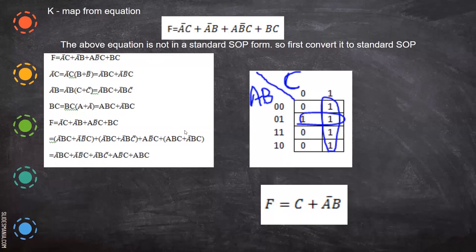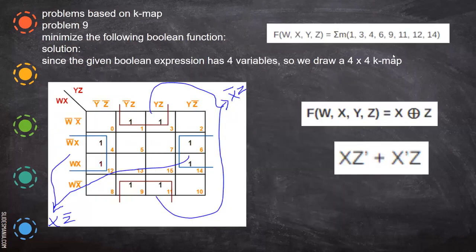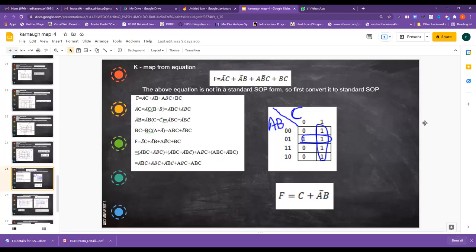In this video, we are going to see further on K-maps. Here, from the given equation, we are going to draw the Karnaugh map. If you see this and the previous diagrams — in the last video we have seen this equation — you can form the equation from the minterms 1, 3, 4.